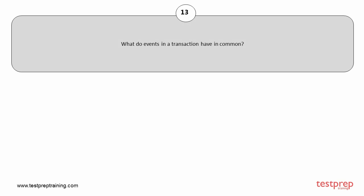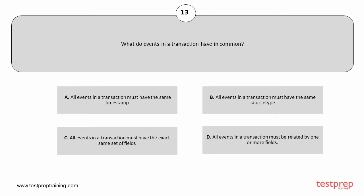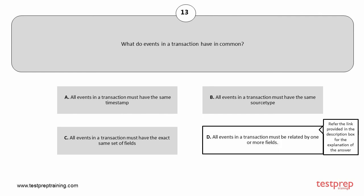Question number 13. What do events in a transaction have in common? Your options are: A. All events in a transaction must have the same timestamp. B. All events in a transaction must have the same source type. C. All events in a transaction must have the exact same set of fields. D. All events in a transaction must be related by one or more fields. The correct answer is option D.